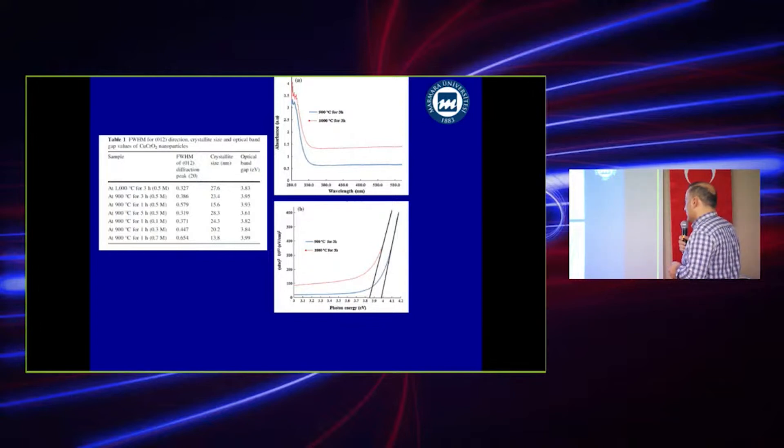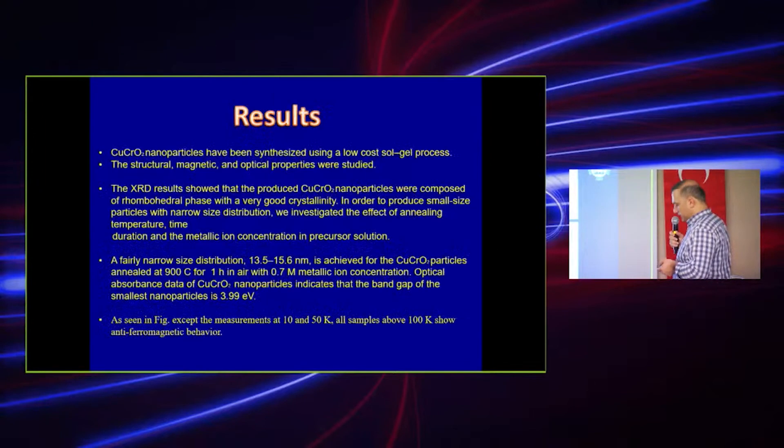We calculated the optical band gap. Here you see the optical band gap is changing like 3.83 to 3.99 electron volts. It means that we can easily arrange the band gap using different annealing conditions.